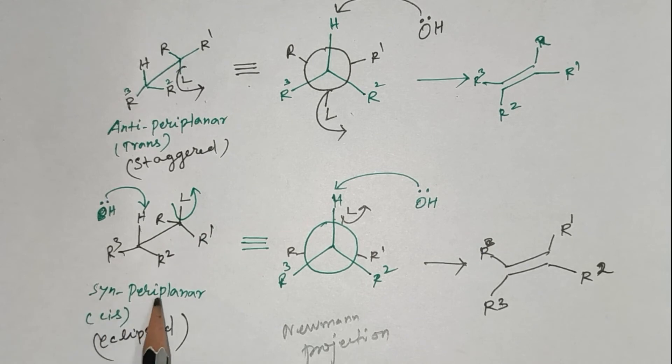This form is the syn-periplanar form, cis form and eclipsed shape. It is the Newman projection formula of eclipsed form.